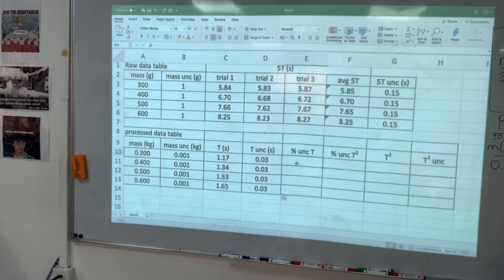Now, percent uncertainty. I want the percentage of this number in that number. Equation, select, divide, select, put it in parentheses, multiply by 100, enter. You've got your percentage. Little dark plus sign, click, drag, drop.